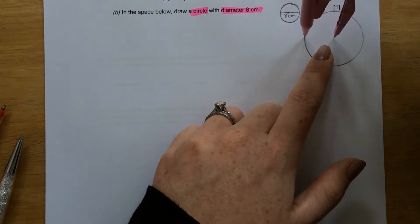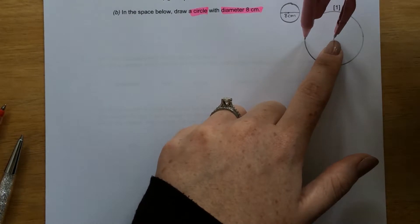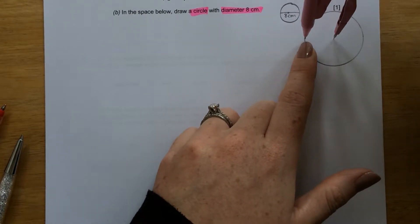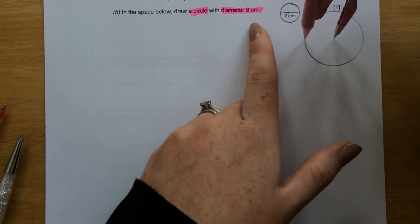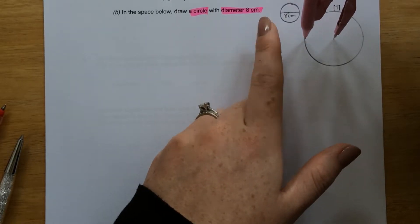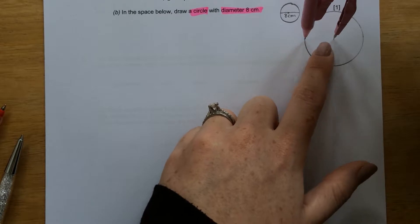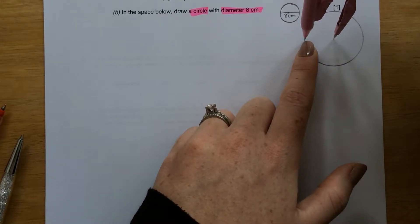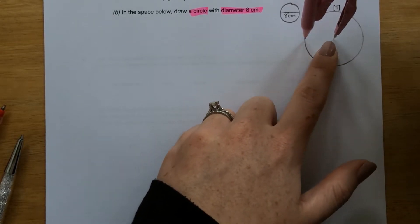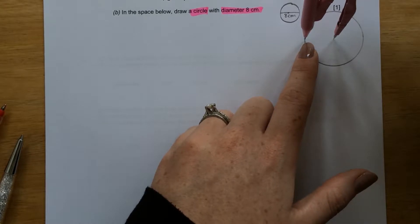So I need to measure from the point of my compass to the pencil so that it gives me a diameter of 8 centimetres. But this measurement here, between the point and the pencil, is not the diameter of the circle, as you can see.